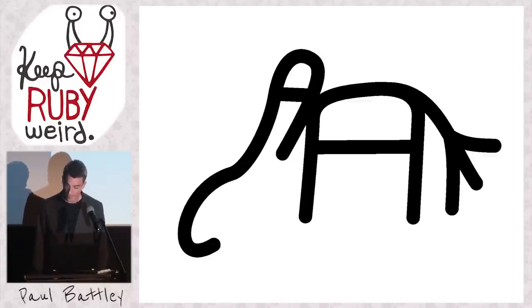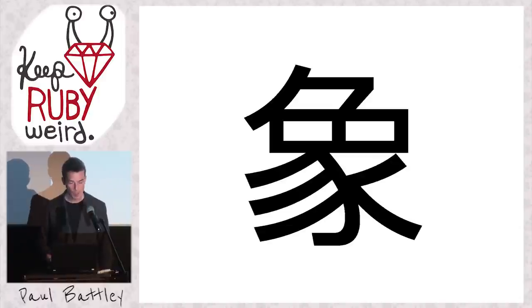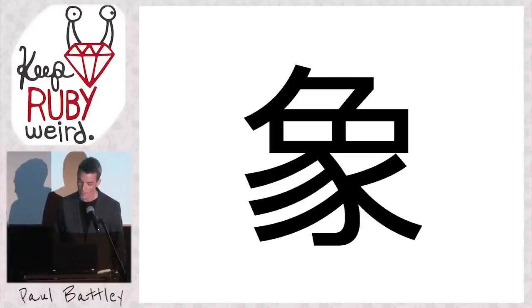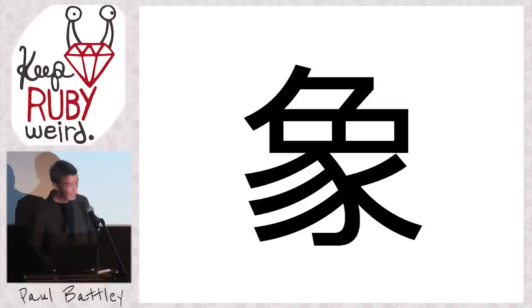It's got legs, a tail, a trunk, a tusk, so it's recognized as an elephant. And over time it's become stylized and squared off. And perplexingly, it's been rotated through a quarter turn. But you can still, if you tilt your head to the side and squint a bit, see an elephant.